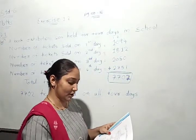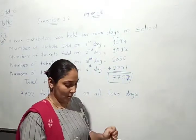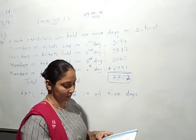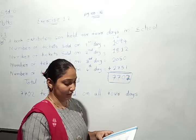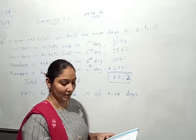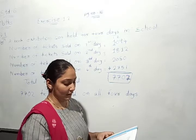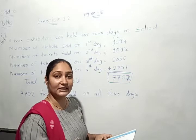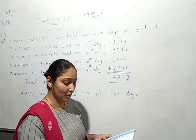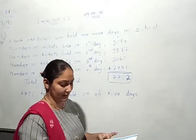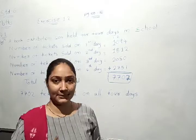A book exhibition was held for four days in school. Number of tickets sold at the book counter on the first day was 1094. Number of tickets sold on second day was 1812. Number of tickets sold on third day was 2015. Number of tickets sold on fourth day was 2751. Find the total number of tickets sold on all four days.